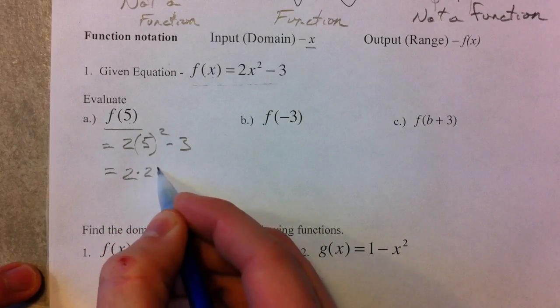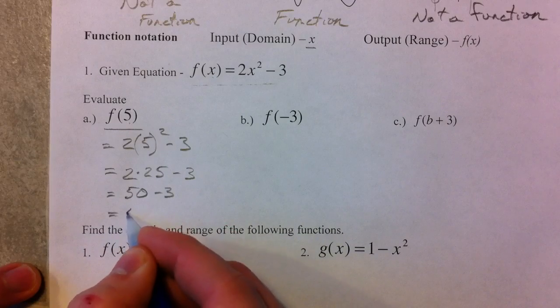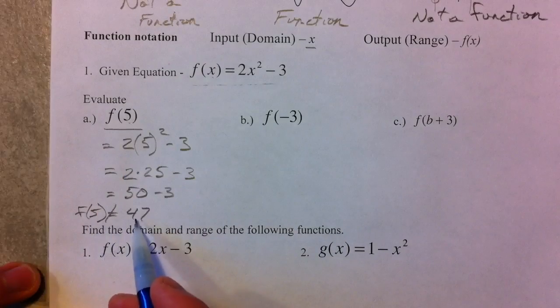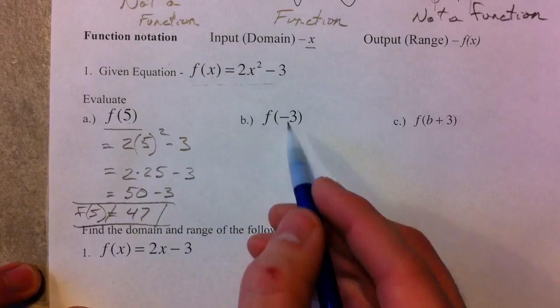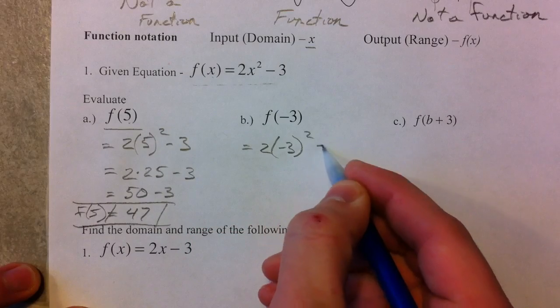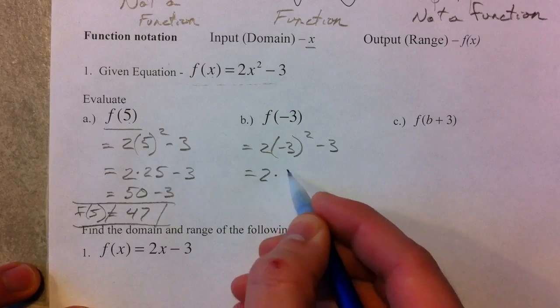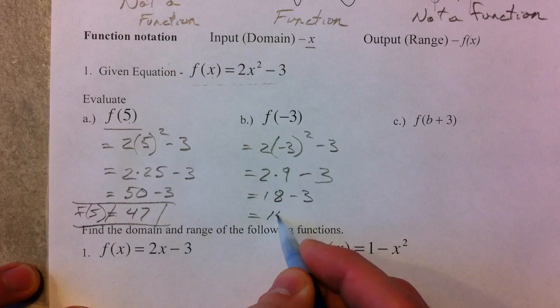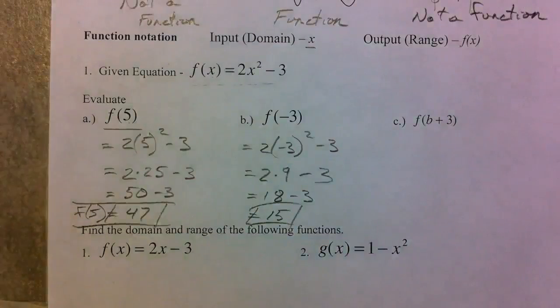So 2 times 5 squared is 25. Remember your order of operations here. And so 2 times 25 is 50, minus 3. So we get 47. And so F of 5, the Y value when you plug in 5 for X, is 47. So negative 3 in the same way. You take and plug in negative 3 in for the X. You just want to make sure you follow order of operations. Negative 3 squared, negative 3 times negative 3 is positive 9. So that's 18 minus 3. And you get 15. And so when you plug in negative 3 into your function, you get 15. That's the connected X and Y.